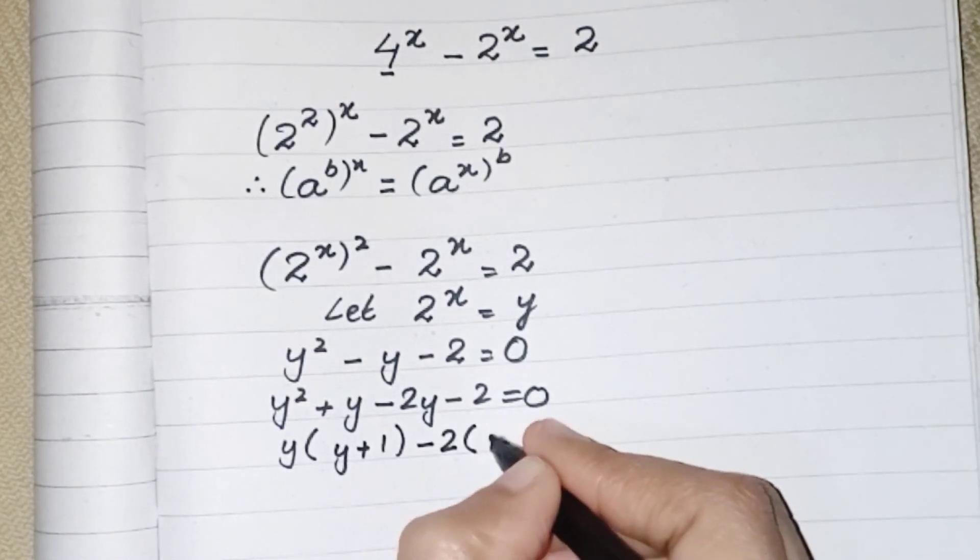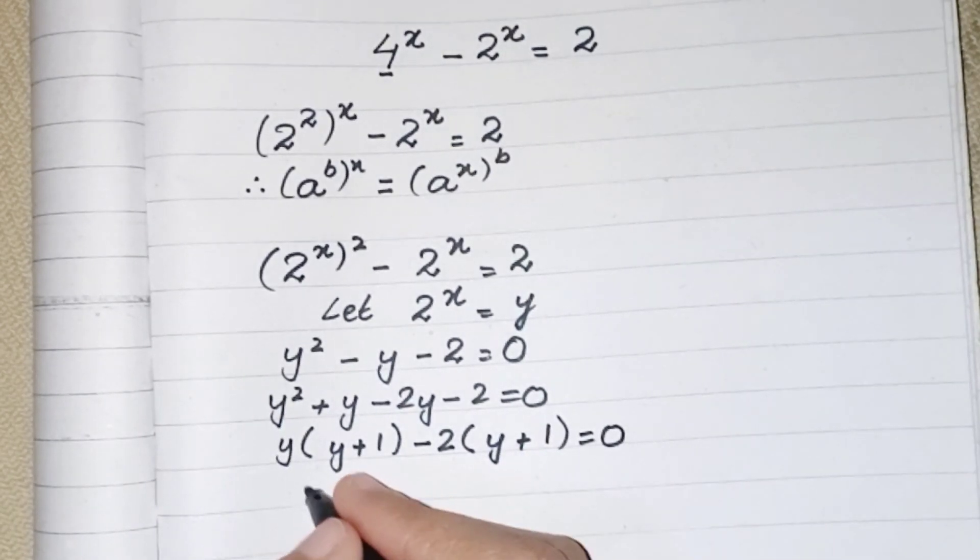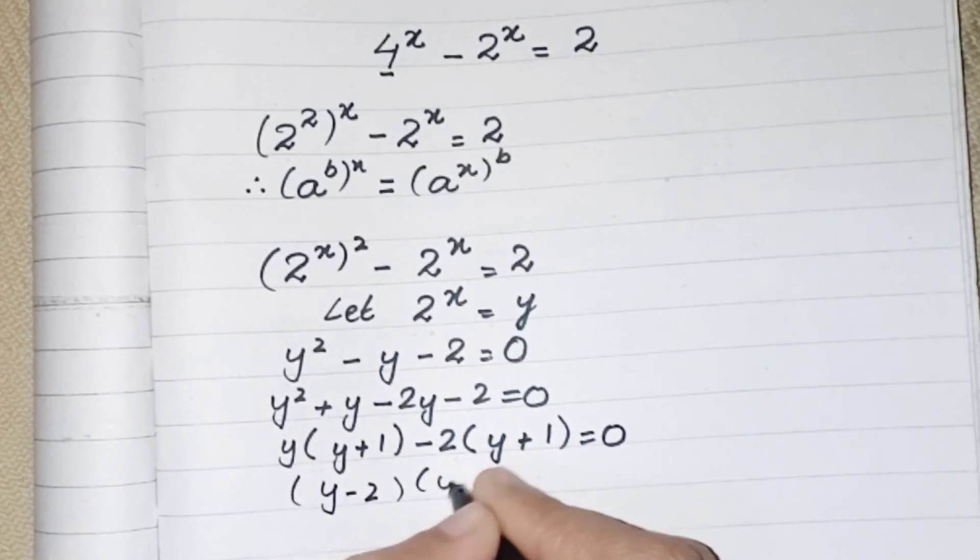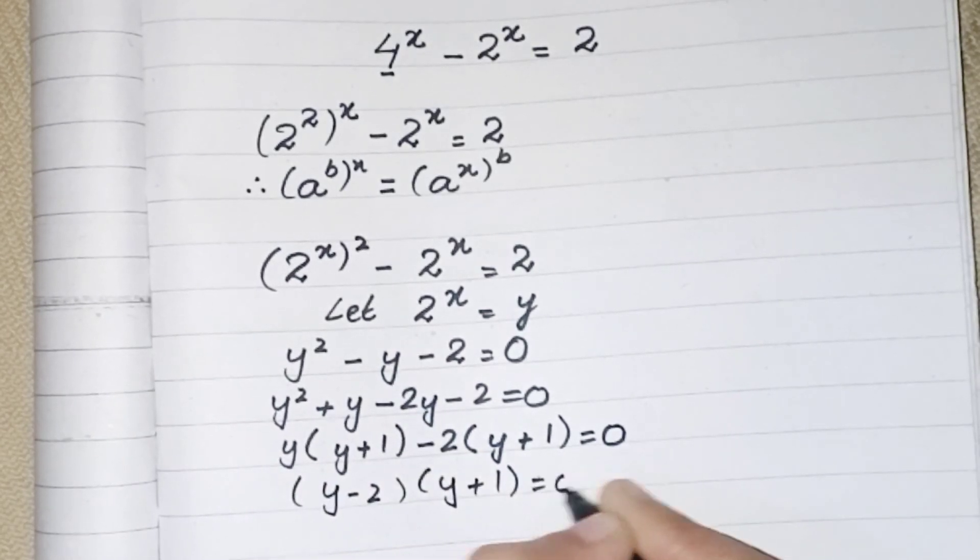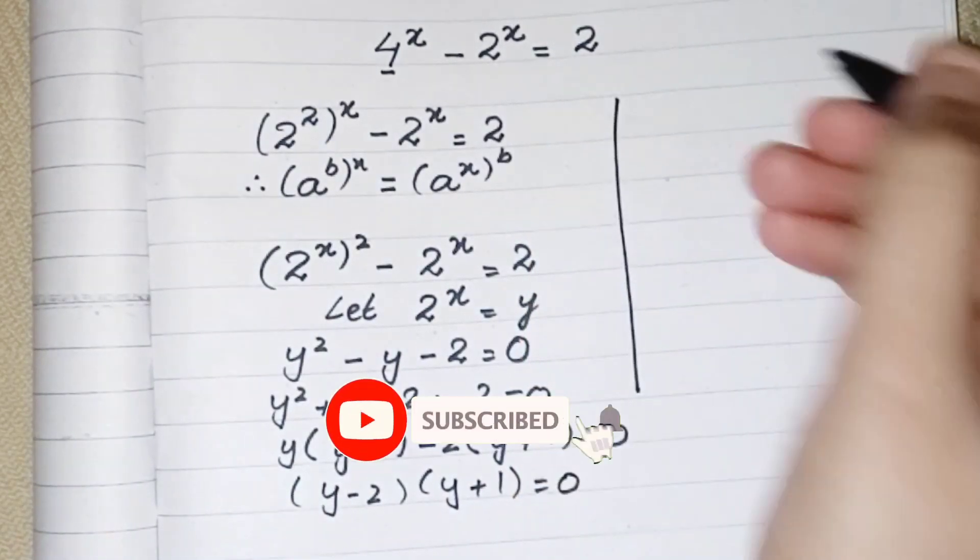Which will be equivalent to 0. So (y - 2) and (y + 1) both are equal to 0 and both are multiplied to each other. To get the value of y, we have to equate them separately to 0.